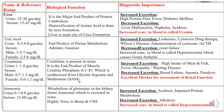Creatinine is basically the end product of creatine, which is an energy source in muscle used for muscle contraction. Increased excretion of creatinine is seen with high intake of meat and fish, in cases of fever, myopathy, and wasting disease. Decreased excretion is seen in renal failure, anemia, and paralysis. So creatinine is an excellent marker for assessment of renal function.